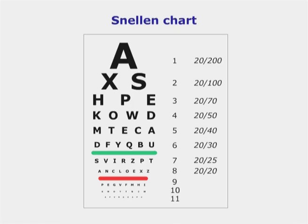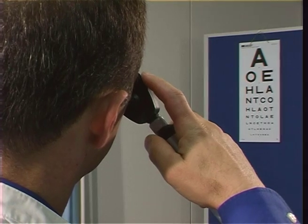Each line on the Snellen chart is usually labeled with a number, which signifies the distance in meters or feet at which it should be clearly visible with normal vision. The light should be dimmed to allow for better pupil dilation and to improve focusing contrast.